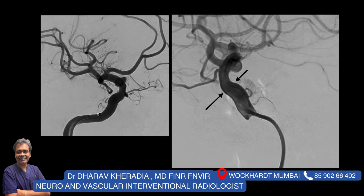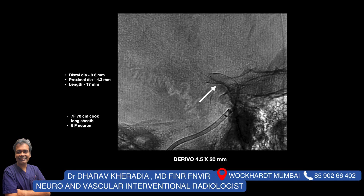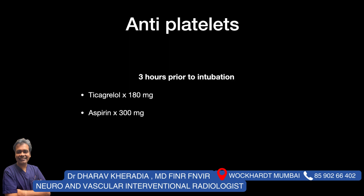These are the angiographic pictures. We need to take measurements for flow diverter placement. The distal diameter was 3.8 mm, proximal diameter was 4.3 mm, and length was 17 millimeters. So we decided to use a Derivo flow diverter, 4.5 by 20 millimeters in size. That's how the flow diverter looks on X-ray fluoroscopy. The patient did well.